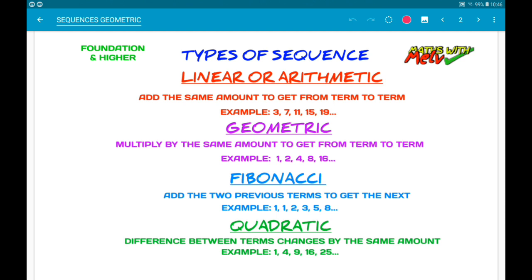So, geometric sequences are ones where we multiply by the same amount to get from term to term.